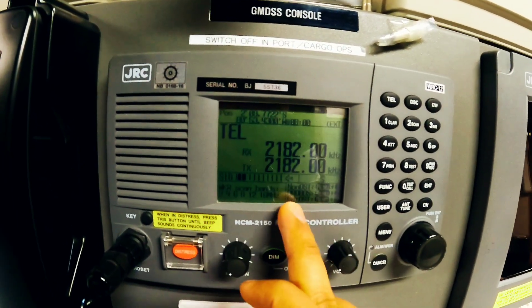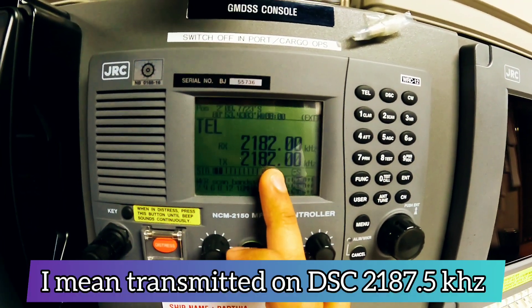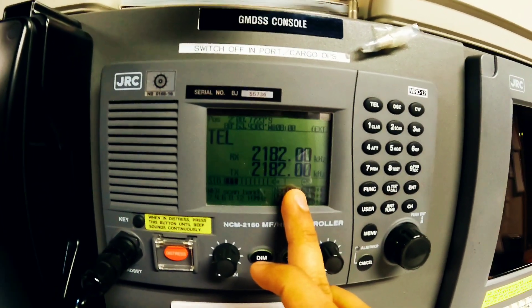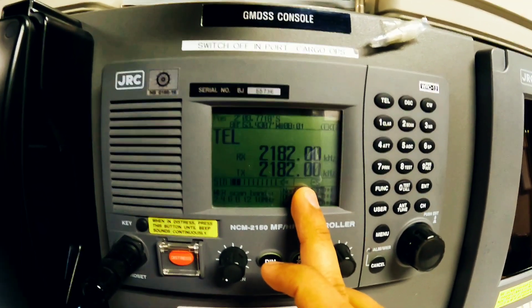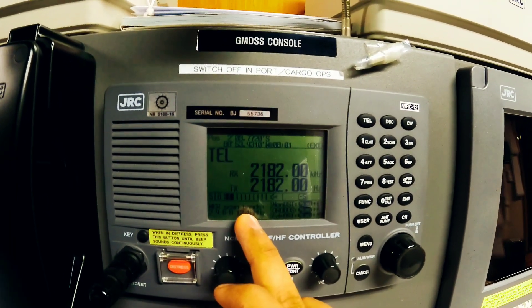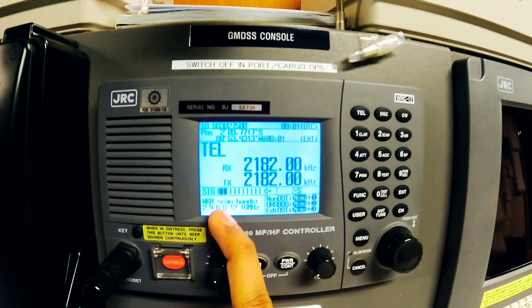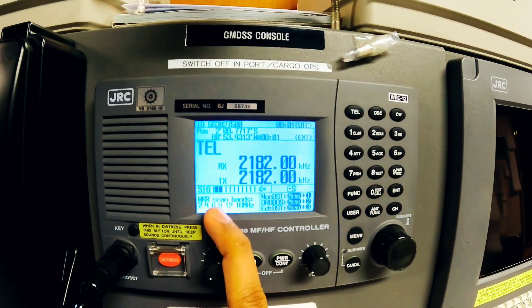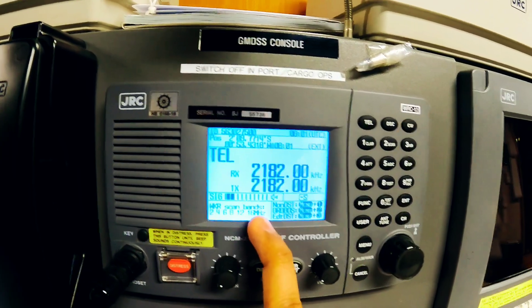After that, going into the frequency, let's say if it is transmitted on 2182 kilohertz, then what you have to do is speak on 2182 kilohertz in the radio telephone mode. But if it is transmitted and acknowledged in HF frequency, then you have to speak on all the frequencies one by one whichever it has been transmitted. You have to transmit your message via radio telephone in all the HF frequencies if it has been transmitted to the HF frequencies.